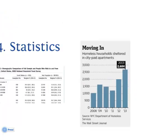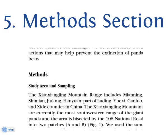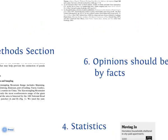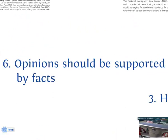In scholarly articles, look for the methods section, which explains how the authors did their research and collected their data. Author opinions, such as blogs or editorials, must be supported by factual information that can be checked for accuracy.